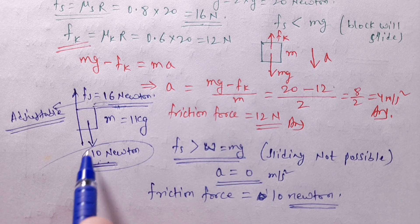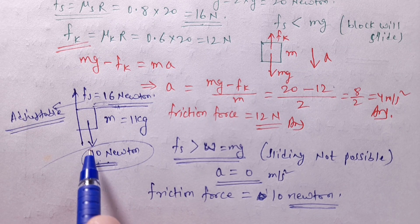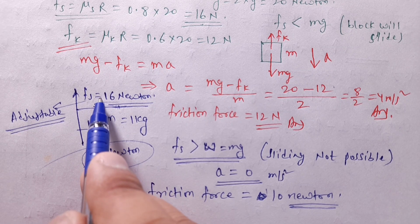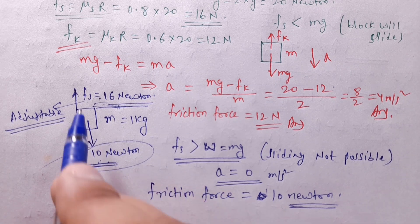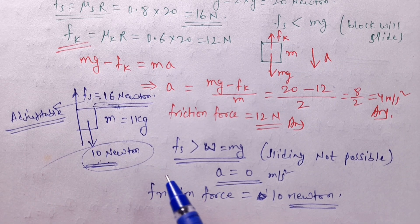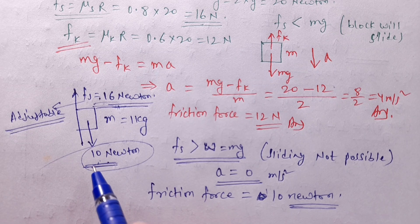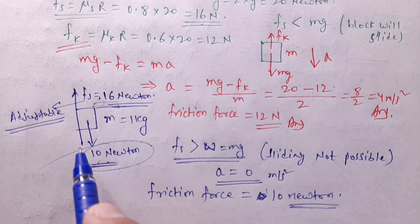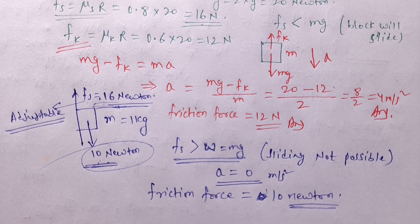If the weight is exactly 16 Newton (equal to maximum static friction), the acceleration is 0 and friction force = 16 Newton, balancing the 16N downward weight. This is the basic but very useful concept of friction.